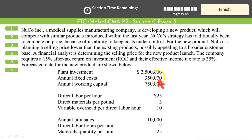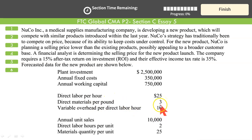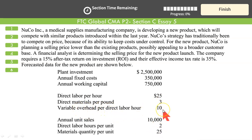The forecast data includes: plant investment, annual fixed cost, annual working capital, direct labor cost per hour — 2 hours needed — direct material at $3 per pound with 25 pounds needed, variable overheads per direct labor hour as the variable overhead application rate, and annual unit sales. That is the data.